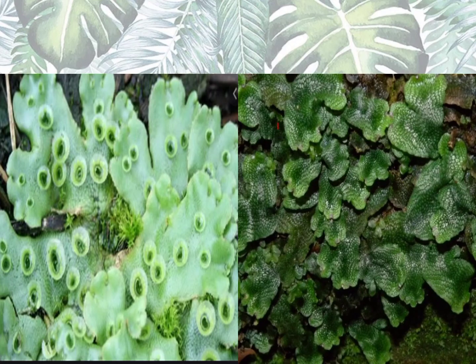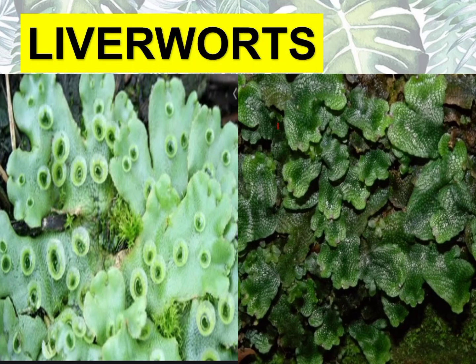This one is an example of a liverwort. Isa rin siyang gymnosperm — hindi siya namumulaklak — pero si liverworts, medyo katropa din siya ng moss and ferns. Si liverworts, sa mga gilid-gilid minsan natin, usually yung mga areas na tinutubuan yan — yung mga mamasamasa at hindi halos napupuntahan ng tao o animal. Si liverworts may kakayahan mag-reproduce sexually and asexually. Meron siyang reproductive parts, pero pinaka-reproduction niya is asexual reproduction through spores din. May mga spores din si liverworts.